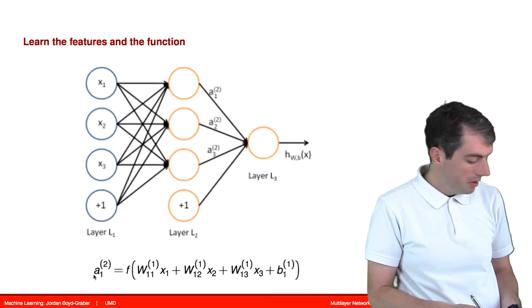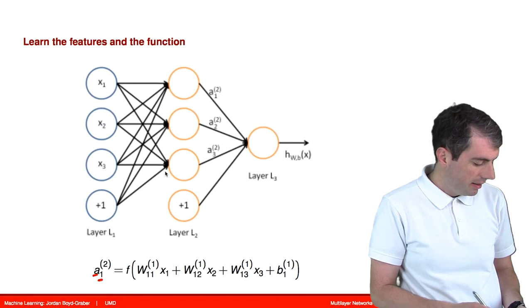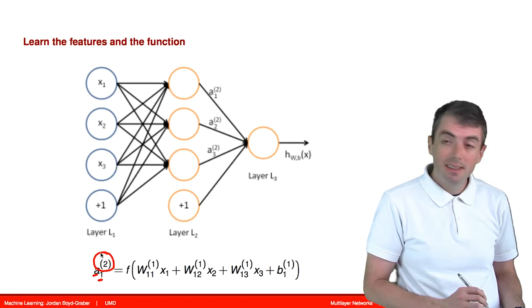Let's take a look at one of these hidden nodes. This is going to be called a, and we'll use a subscript to say that it is the first one, and a superscript to say that it is on the second layer.